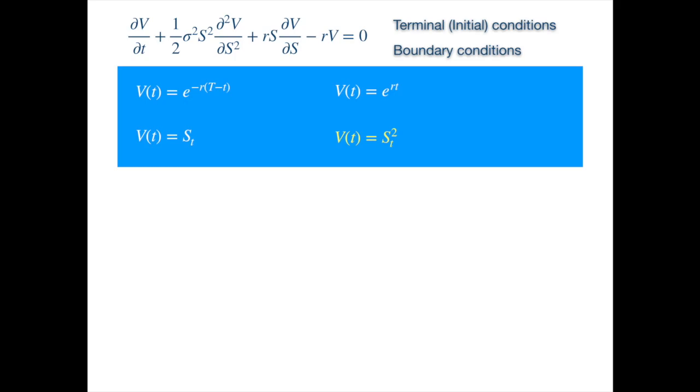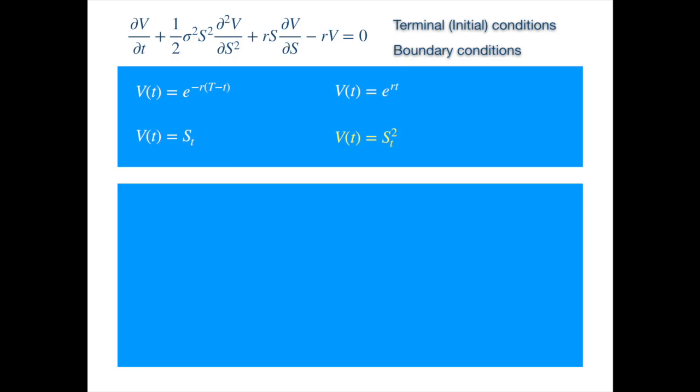But our discerning audience is expecting an analytical solution instead of a numerical solution. And to deliver on that analytical dimension, we will need to perform a few more transformations and simplify the equation. And once we have simplified the equation to the diffusion equation, the solution to which we know, then it's plain sailing.